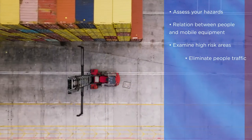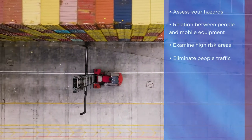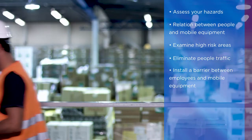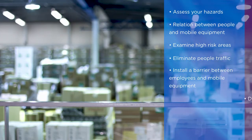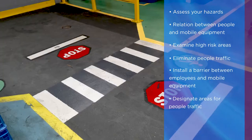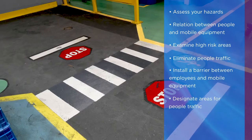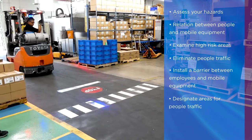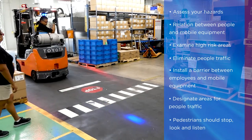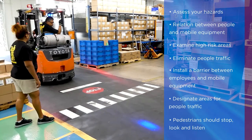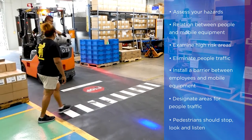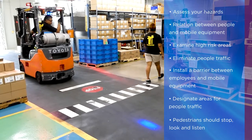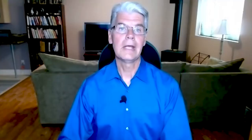Can you eliminate people where lift trucks move? Would you benefit from installing a hard barrier between your people and mobile equipment? Do you have designated pedestrian walkways that keep people separate? Do your pedestrians consistently stop, look, and listen before crossing an aisleway? Have you established who has the right of way?